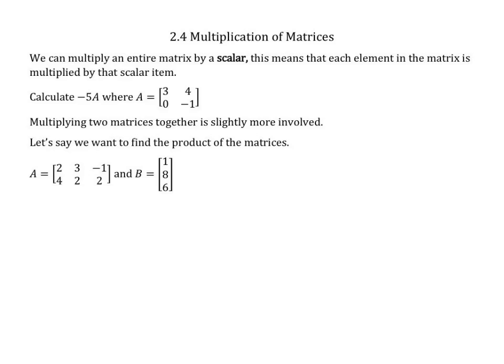So let's determine what negative 5 times A would be. So our matrix A is 3, 4, 0, negative 1. So we want to multiply each element in that matrix by negative 5.